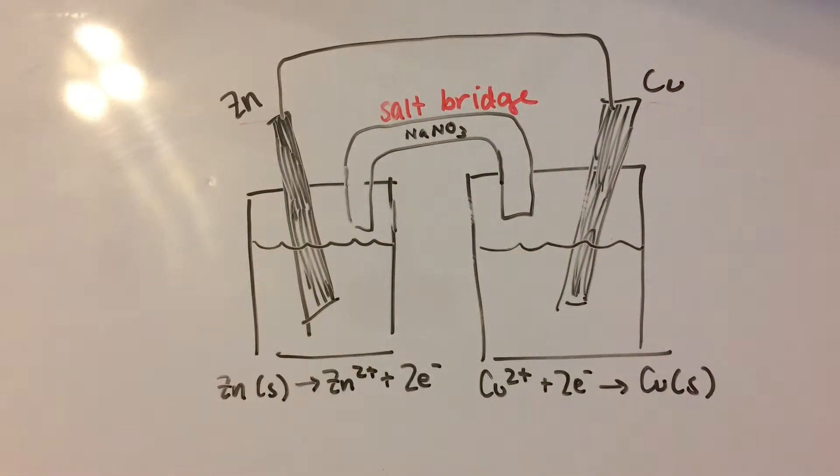I'll explain what this is for later. So it says here that zinc is going to go into zinc ions and two electrons. Over here, we have copper ions plus electrons yields solid copper.